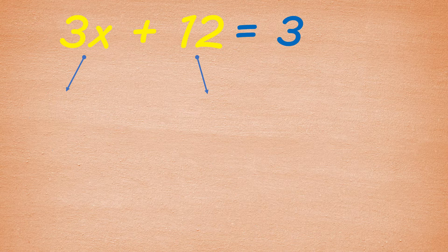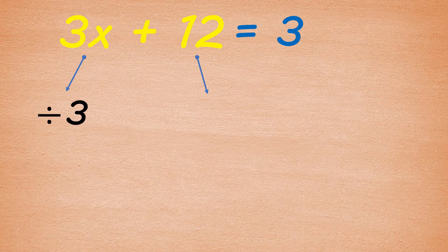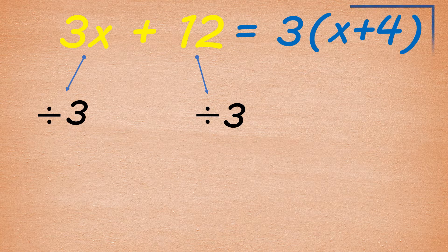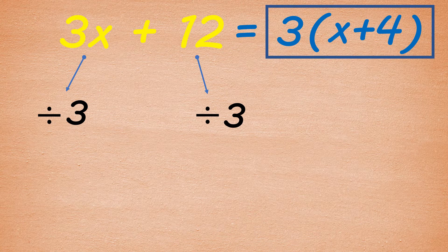Then to get the other factor, use the common factor 3 to divide each term in the given polynomial. 3x divided by 3 is x, and positive 12 divided by 3 is 4. So we have x plus 4. Therefore, the factors of 3x plus 12 are 3 and x plus 4.